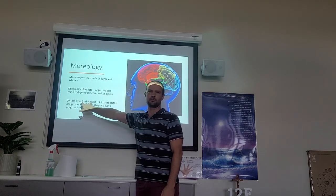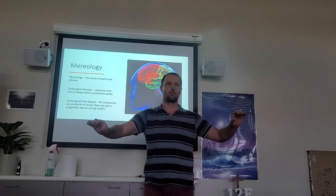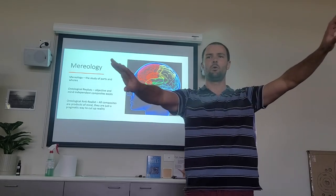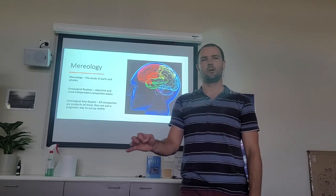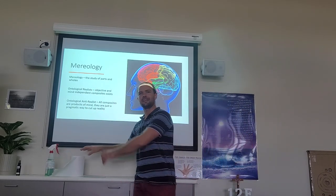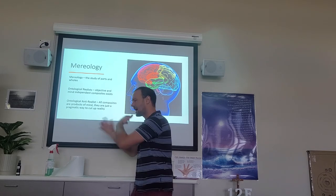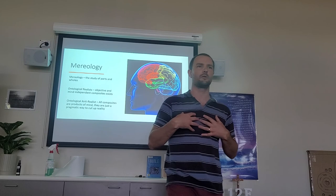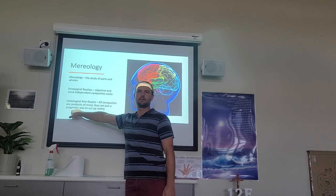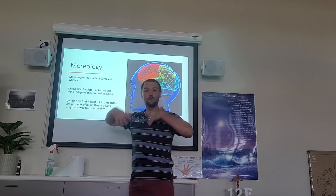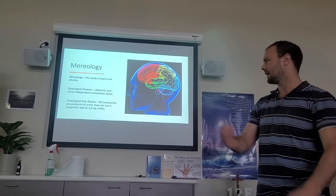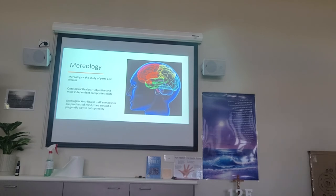Then you have ontological anti-realists. They say there's no such thing as ordinary objects — composites do not exist. It's all just atoms in the void, or superstrings in the void. So we have these two competing theories: does the roll of paper actually exist, or is it just our way of cutting up reality to understand it so we can use it for our own purposes — a pragmatic way? Pragmatic means practical, useful. We can use it, that's why we do it. Not necessarily the truth, but useful as the truth.